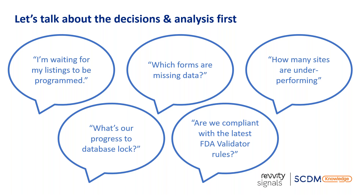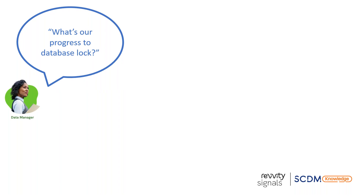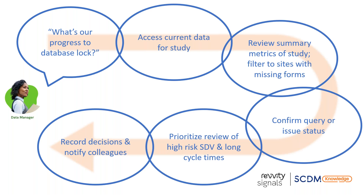Today we'll focus on progressing the database lock and compliance with FDA validator rules. Let's talk process first — it starts with data access. Time-relevant data access means it's refreshed and you're not waiting for the next data cut. Then you want a summary that allows you to hone in on the most important issues — think of it as a funnel, helping you simply identify the most critical areas. This should be guided by your critical-to-quality process or your risk-based indicators that you've already created during study setup.